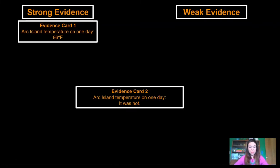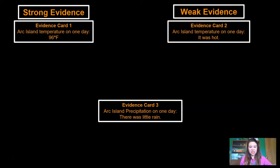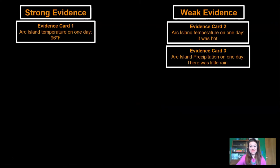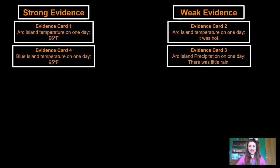Evidence card two: Arc Island temperature on one day — it was hot. That's weak evidence. Just saying something is hot is not a good way to compare it to other islands. Evidence card three: Arc Island precipitation on one day — there was little rain. That's weak evidence — no measurement, so it won't help our argument. Evidence card four: Blue Island temperature on one day — 95 degrees Fahrenheit. That's strong evidence — it has an actual measurement.